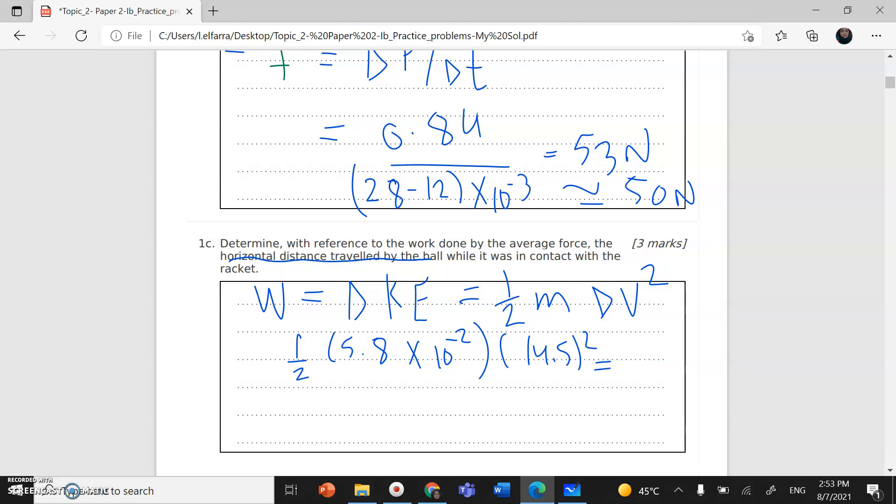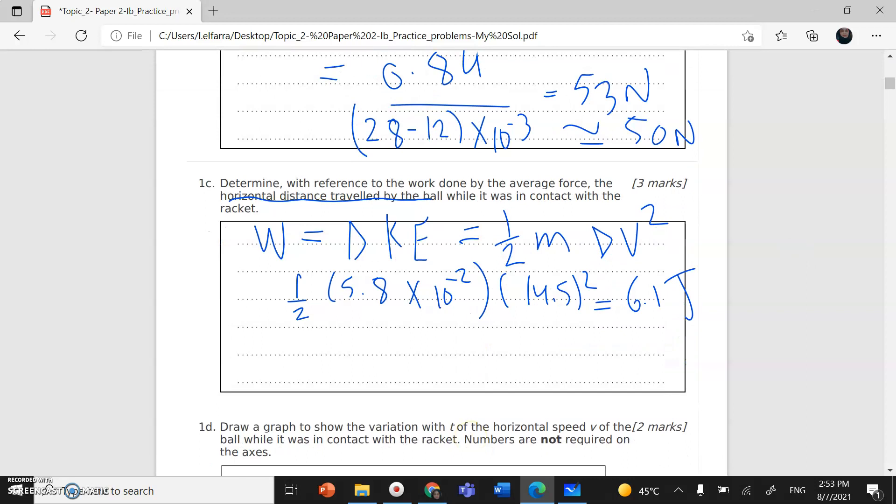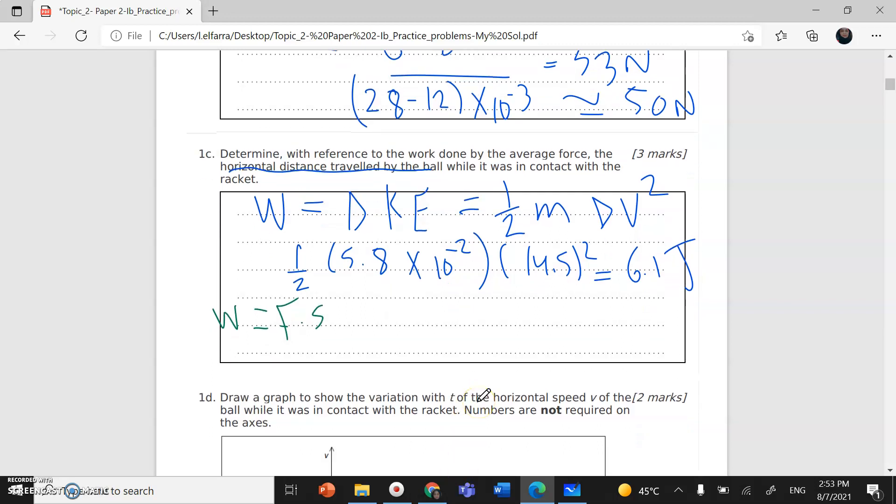There is another formula for work. I know work equals force times displacement in the same direction of the motion. So W is 6.1, force is 53, times displacement. I can call it d, so I don't confuse with time.